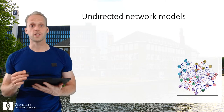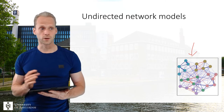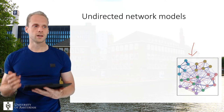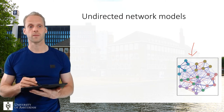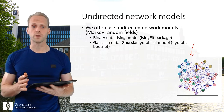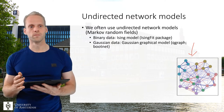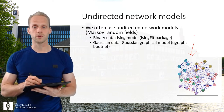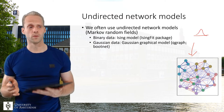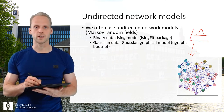So instead of estimating directed networks, we have moved to estimating undirected networks. These undirected networks are a very powerful tool that you now see quite often used in the literature, especially when people are using network analysis. An undirected network is called a Markov random field. For binary data, this is called an Ising model, and for continuous data that's normally distributed, it's called the Gaussian graphical model or partial correlation network. I'll talk a bit more about this assumption of normality in a later video as well.